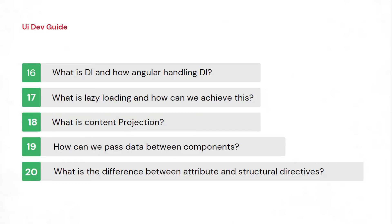A very important question is how to pass data between components. There are multiple ways: for parent-child components, use Input/Output; for sibling components, use a Subject with a service. Once you mention Subject, they'll ask the types — BehaviorSubject, ReplaySubject, AsyncSubject — and the differences. For complex applications with many interlinked components and services, NgRx is preferred; for simpler apps, Subject is sufficient to avoid performance issues.